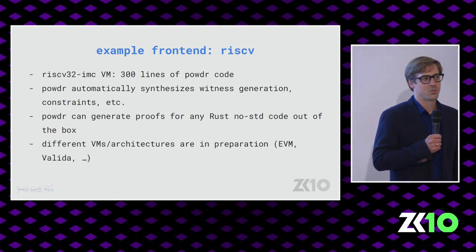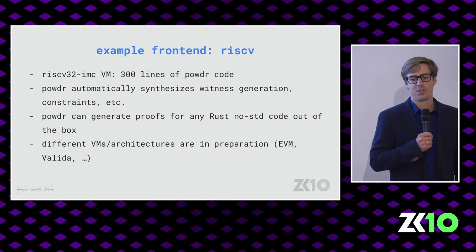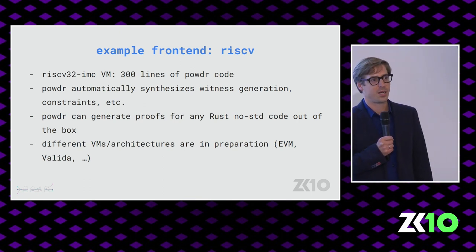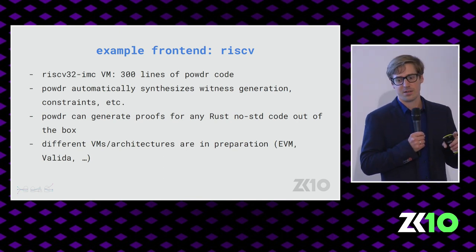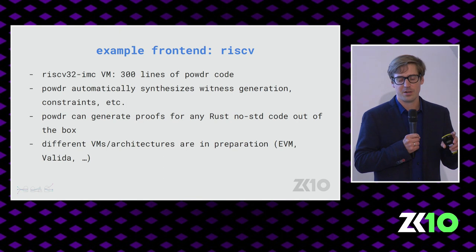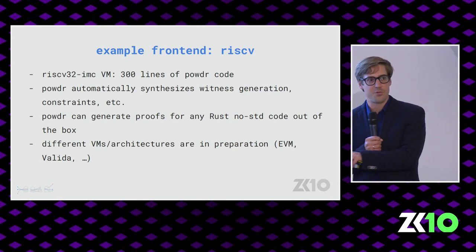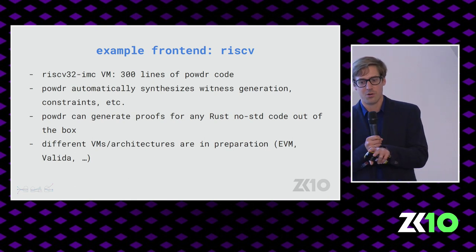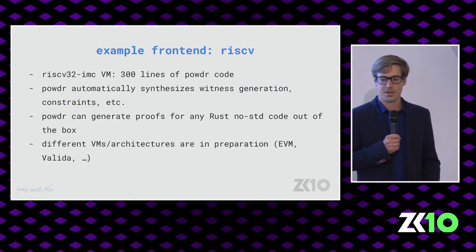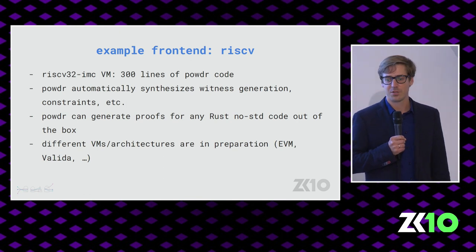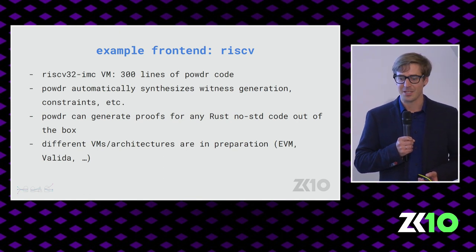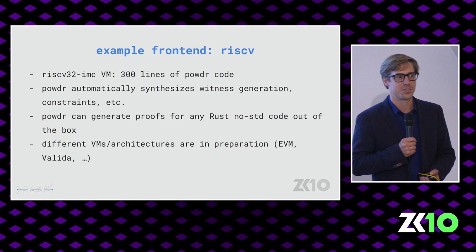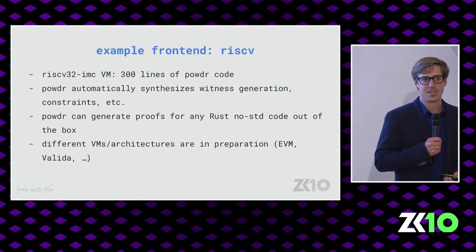We also want to implement Valida as a different frontend — it is an LLVM backend — so we can compare compiling Rust code through Valida and then through Powder versus through our RISC-V frontend. We also have an EVM frontend in preparation. The idea is that you have one system where you can swap out frontends and backends and see what difference it makes.